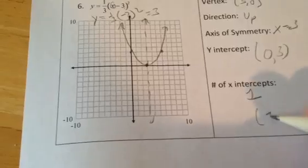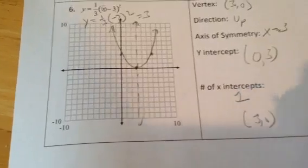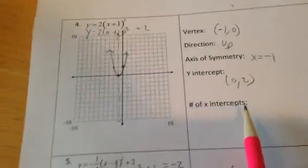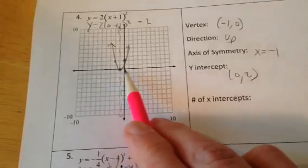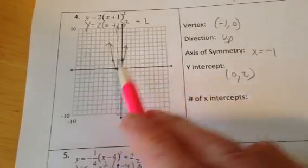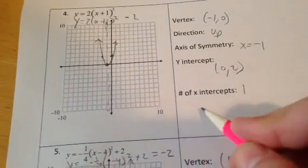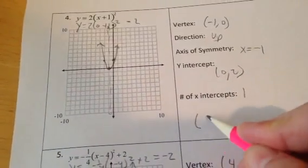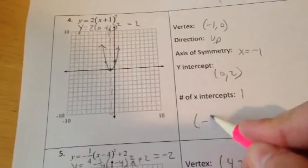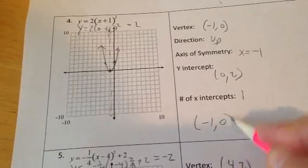You can actually read that x-intercept directly — it's the same as the vertex: (3, 0). I realized I forgot to answer it on the previous one — that was also a case where it crossed the x-axis just once, at negative 1, 0.